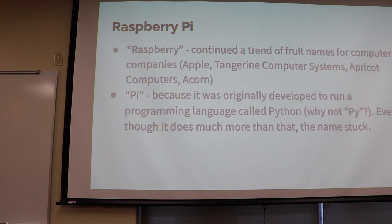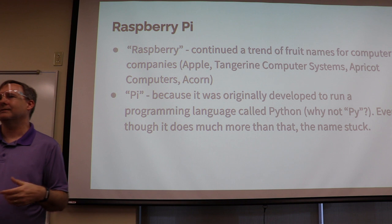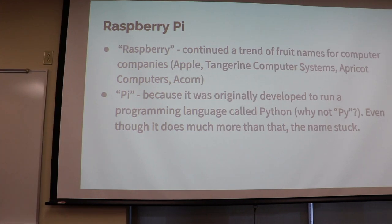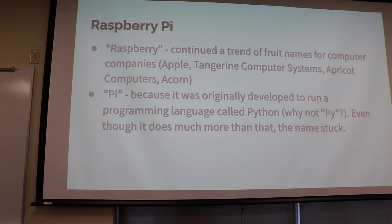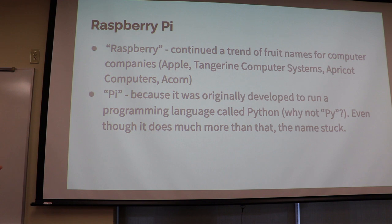That also allows us to do things like the Raspberry Pi. Why is it called a Raspberry Pi? The Raspberry part is because there was a trend of naming computer companies after fruit — you had Apple, Tangerine computing systems, Apricot computing. Acorn is sort of a distant cousin. That's exactly why they named it Raspberry. The Pi part was not actually for the number pi, but because it was originally developed to run a programming language called Python. As they went through development, they realized it did a lot more than that well. The Pi name stuck, so they just kept calling it Raspberry Pi.